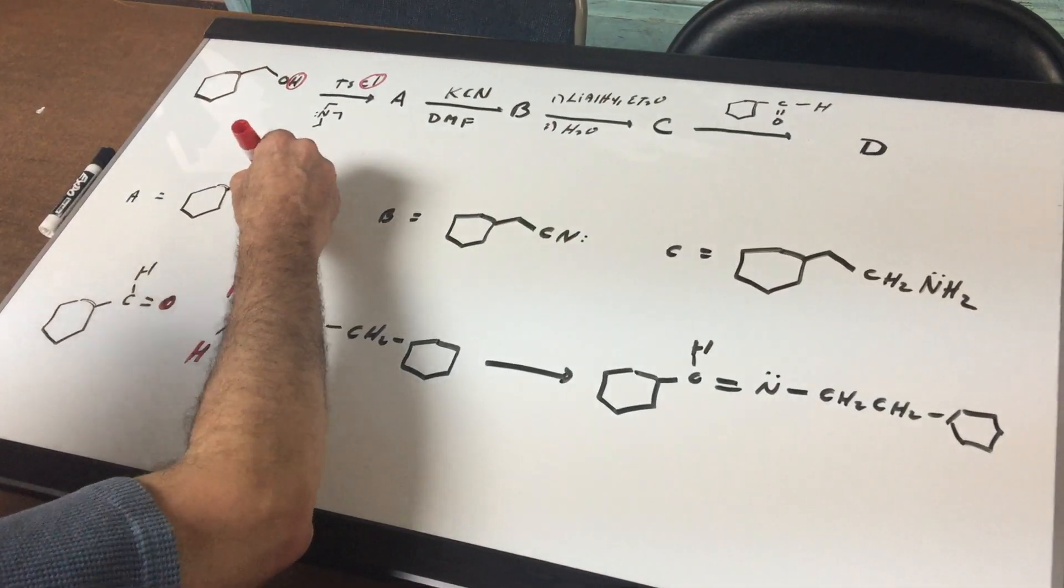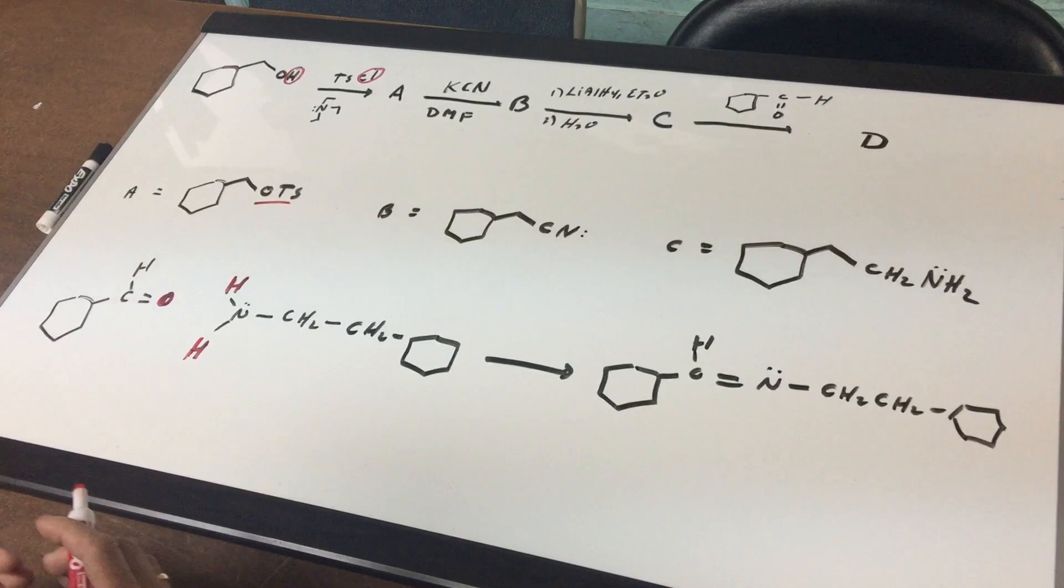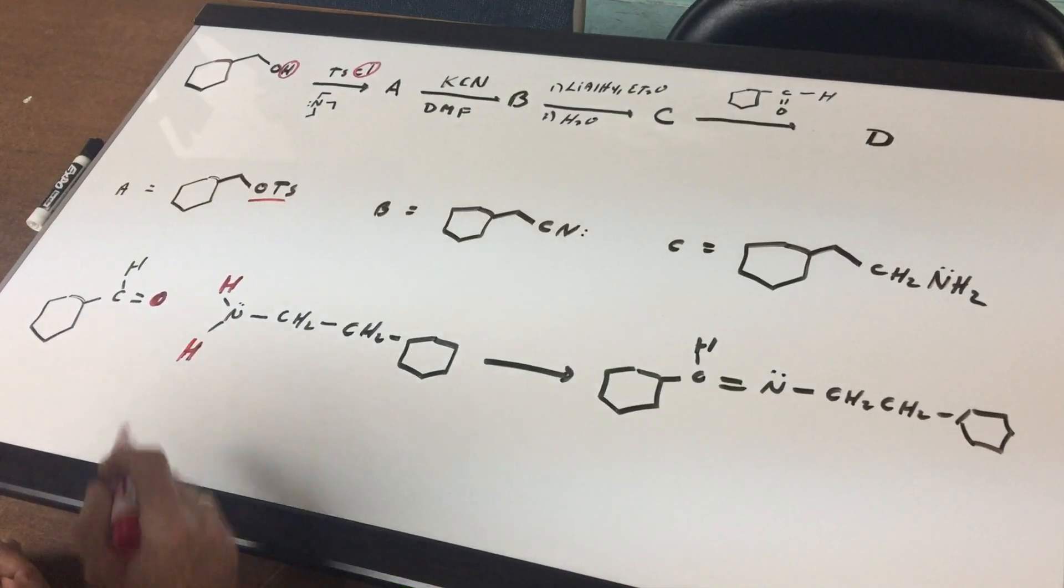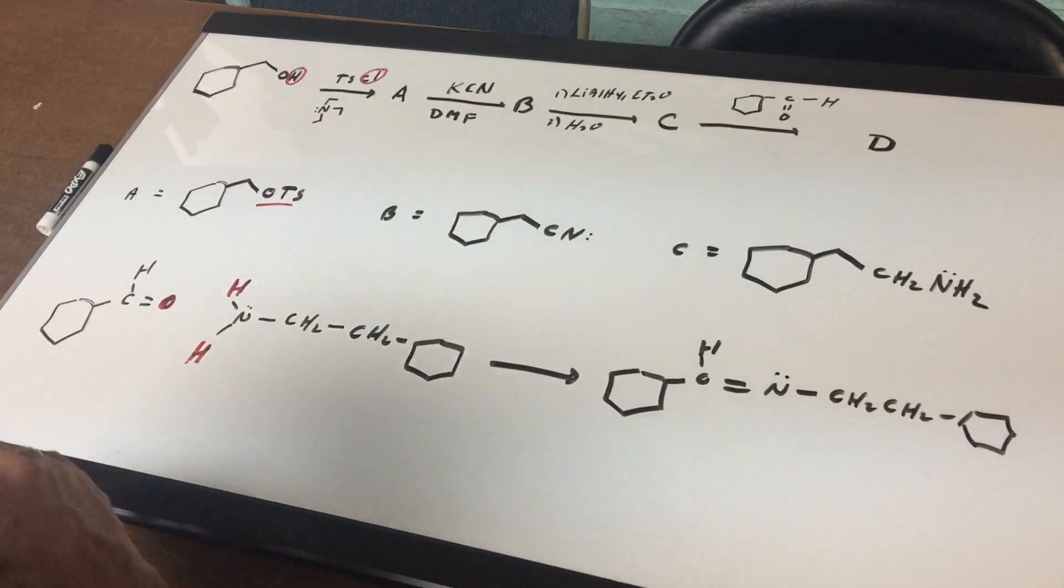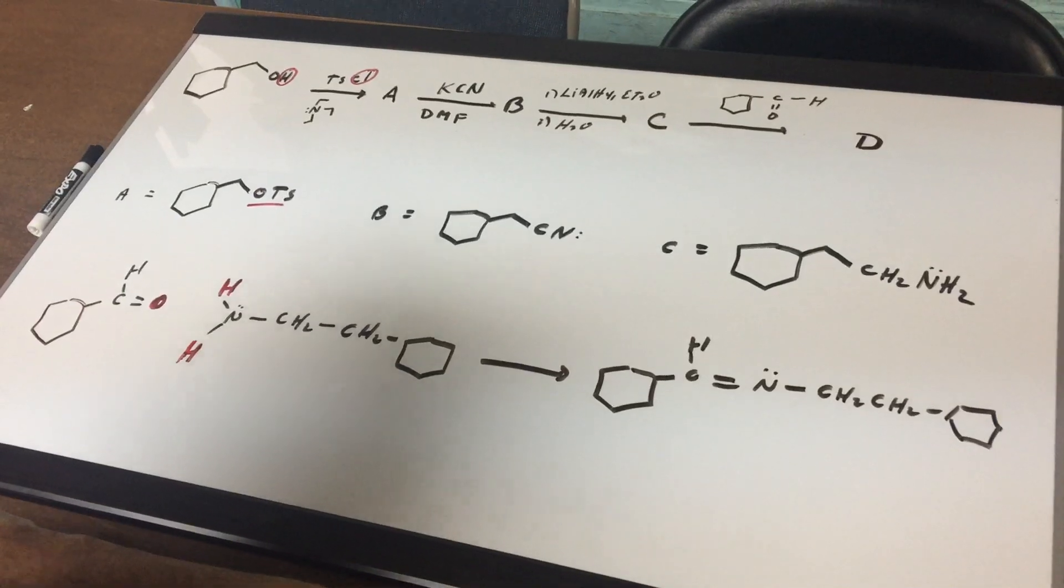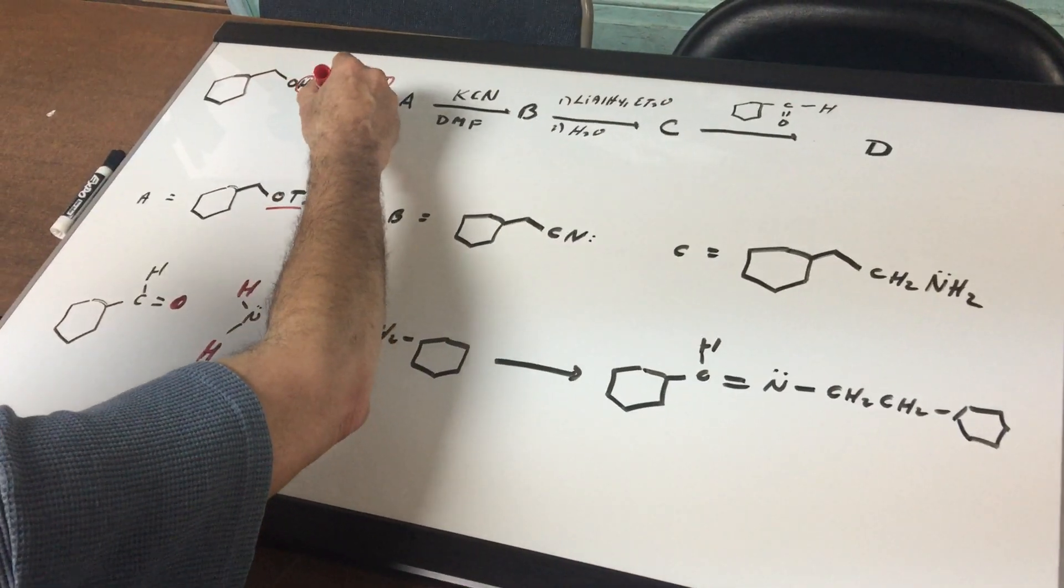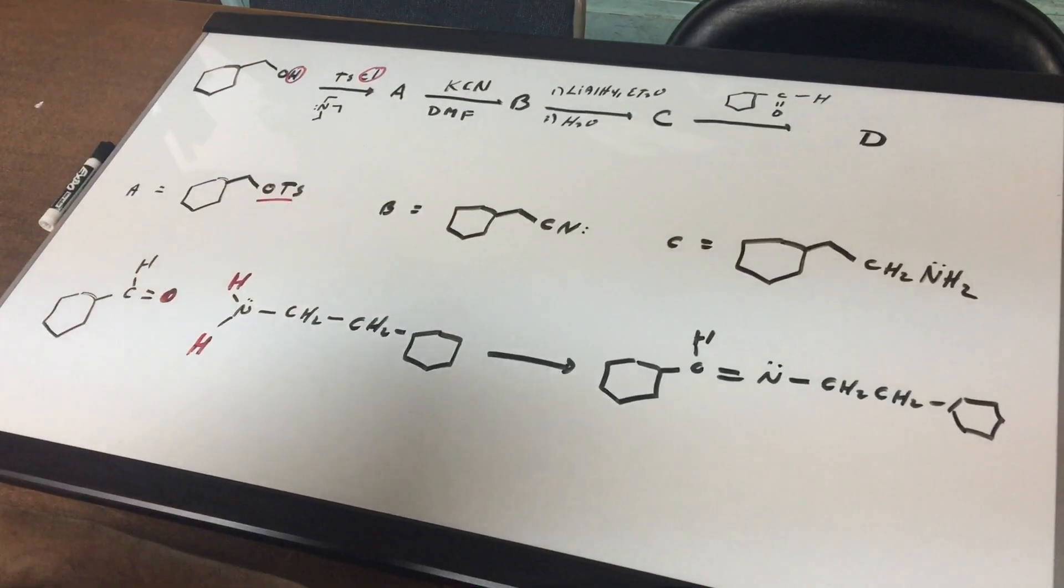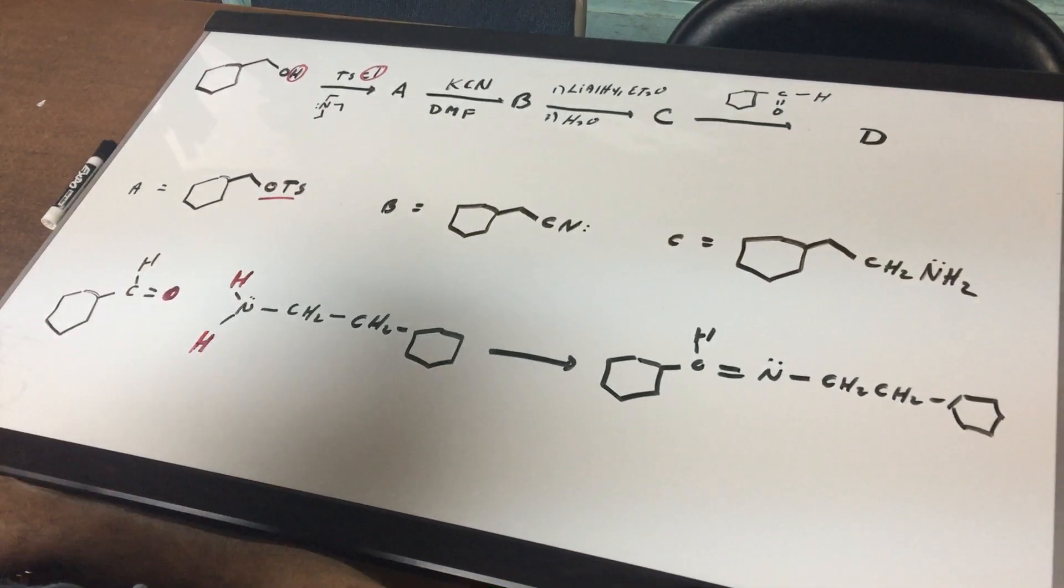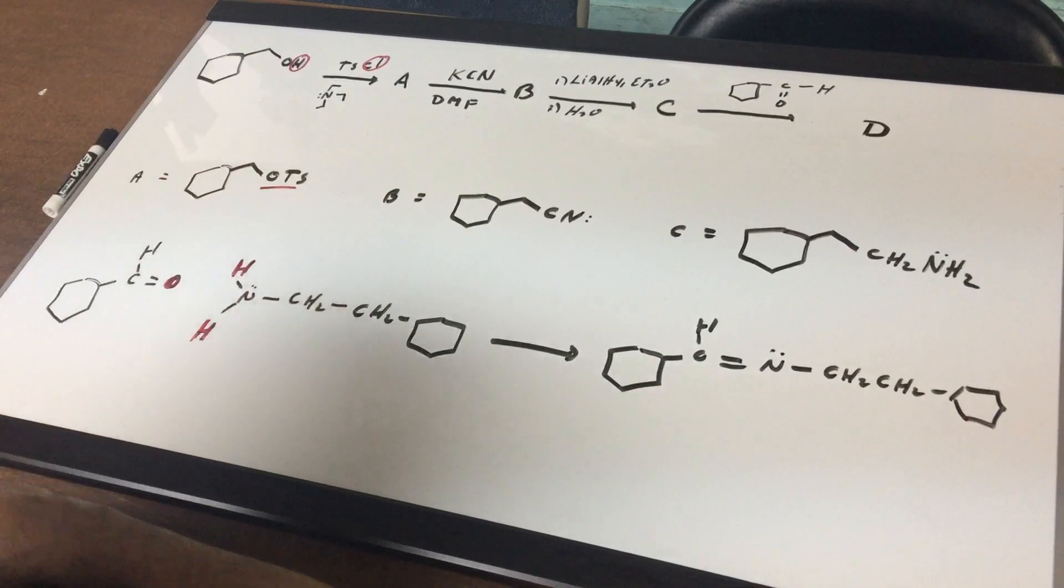If you ever see this type of group, just remember it's a very, very good leaving group. So in the first reaction, we took cyclohexylmethanol with tosyl chloride and underneath it is just the solvent, triethylamine. So there's nothing to be concerned with. And that gave us the tosylate.